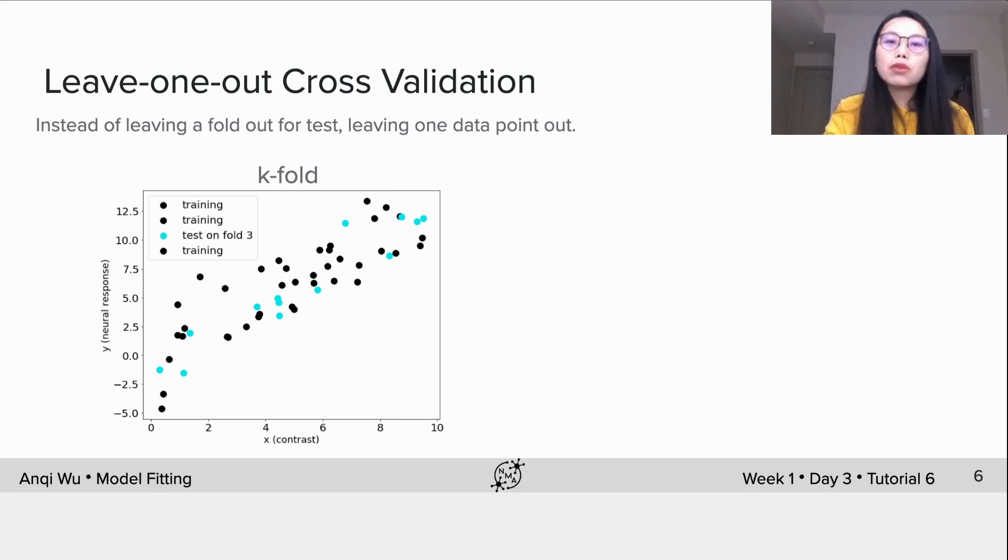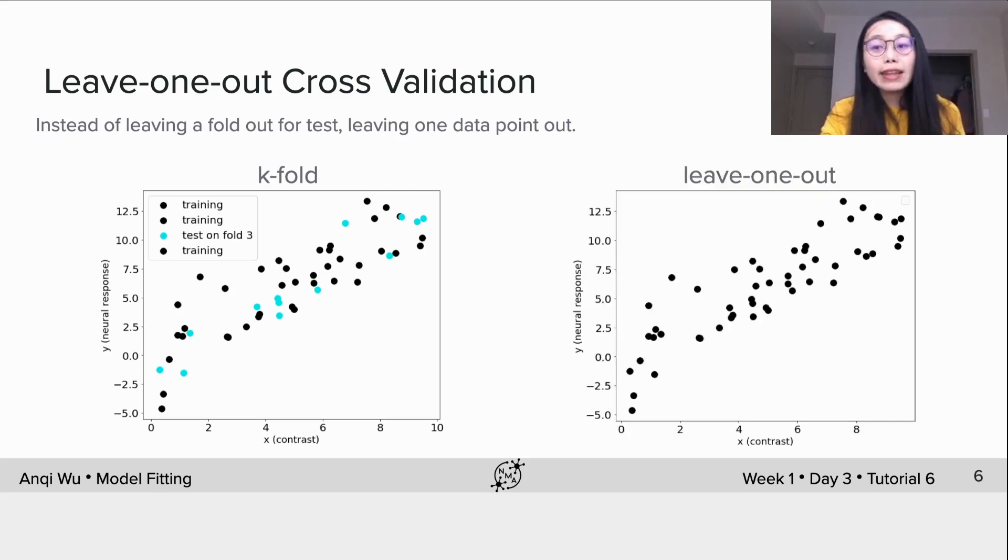Basically, the more folds we split, the more precise the measure is, because weird splits such as the one I showed at the beginning of this video will be averaged out. But that is at the expense of greater computational cost. And leave one out is the extreme where you pick one data point for test, thus you have as many folds as data points, and thus usually the computational cost is very high.